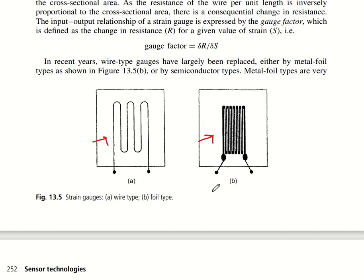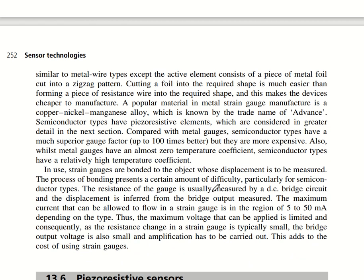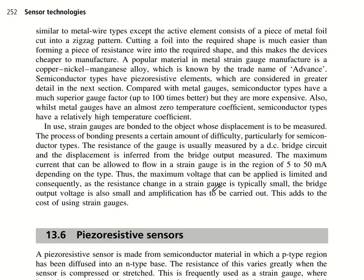Metal foil types are very similar to wire types except the active element is a piece of metal foil cut into a zigzag pattern. Cutting foil into the required shape is much easier and cheaper to manufacture than forming resistance wire. Strain gauges are made of copper-nickel-manganese alloys known by the trade name Advance. Semiconductor types have a piezoresistive element with a gauge factor up to around 100 times better than metal gauges, but they are very expensive.